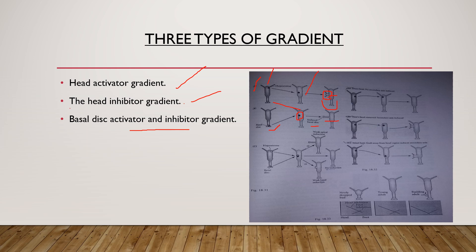Third is the basal disc activator and inhibitor gradient. In this case, when both head activator and inhibitor are placed in the middle of the hydra, three conditions occur: first is weak apical induction, where an apical structure forms but is not fully expressed; second is no induction, where nothing is formed; and third is strong basal induction.